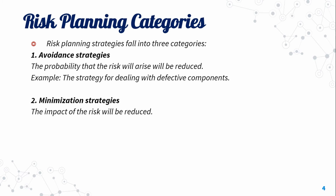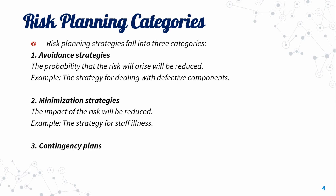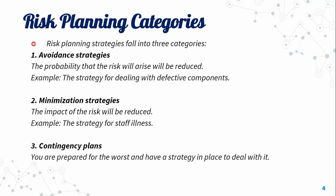The second category aims to reduce the impact of the risk. The third category involves contingency plans — you are prepared for the worst and have a strategy in place to deal with it. An example is the strategy for organizational and financial problems.